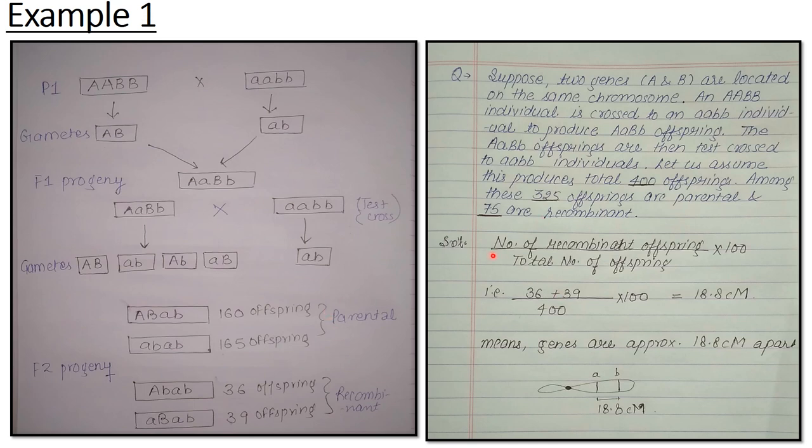Now these things we know, apply the formula. Formula is: number of recombinant offsprings divided by total number of offsprings into 100. How many offsprings were there? We have recombinant 36 plus 39, total is 400, it's given here, into 100. Result is 18.8 centimorgan. Unit we discussed - it means genes are approximately 18.8 centimorgan apart. If we want to see the diagrammatic view, this is the diagrammatic view. What is the distance between these two genes? 18.8 centimorgan. So easy.